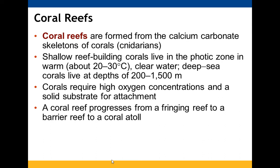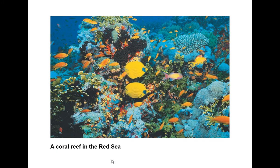Coral reefs are formed from calcium carbonate skeletons of cnidarians. Shallow reef-building corals live in the photic zone in warm, clear water. Deep-sea corals live at 200 to 1,500 meters with less light available. They require high oxygen concentrations and a solid substrate for attachment. Reefs can progress from a fringing reef to a barrier reef to a coral atoll.